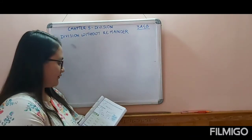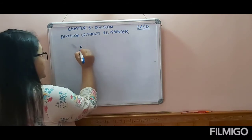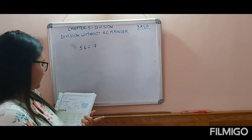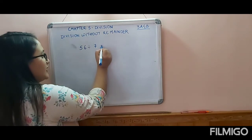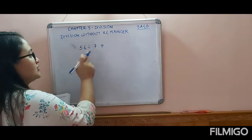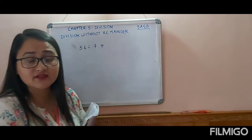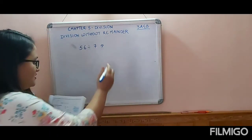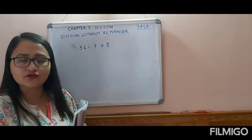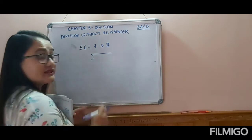Before getting started, let me teach you some basic terms in division. For example, if I tell you to divide 56 by 7, you can write your answer directly — 7 8s are 56, answer is 8. But this is not the correct way of doing division. You have to do division like this, using the division sign.